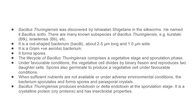That is delta endotoxin, produced during the particular sporulation stage. This protein is called crystalline protein or cry protein. Cry genes are written with capital C; cry proteins with small c. These cry proteins have insecticidal properties.